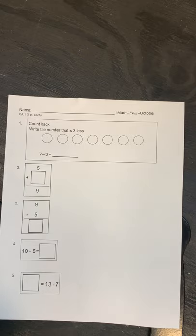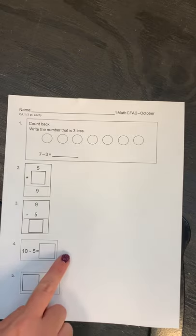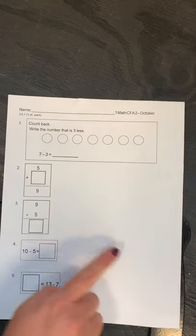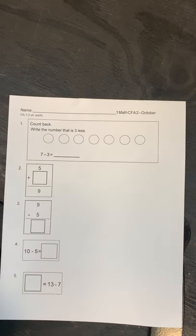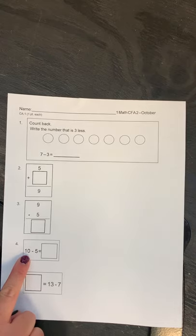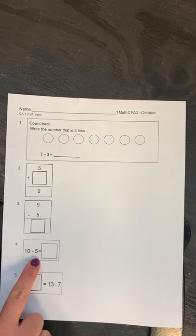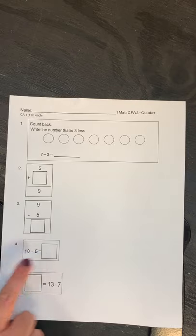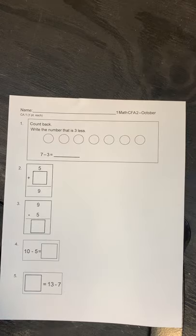Number four. Again, if you want to use pictures you are welcome to use pictures to show your subtraction like we did for number one. Or if you want to use your fingers, you can do that too. But it wants us to start at 10 and take away five. 10 take away five equals what? Write your answer in the blank, number four.